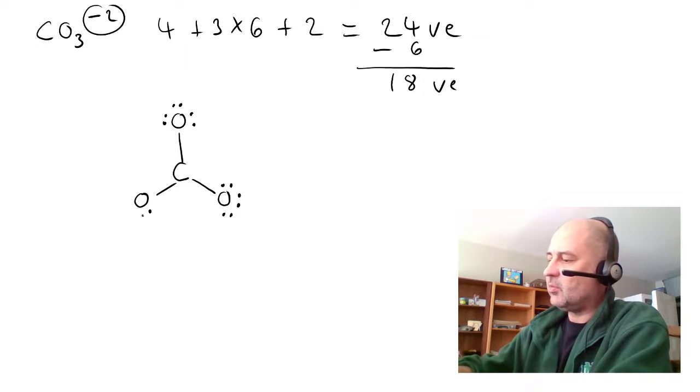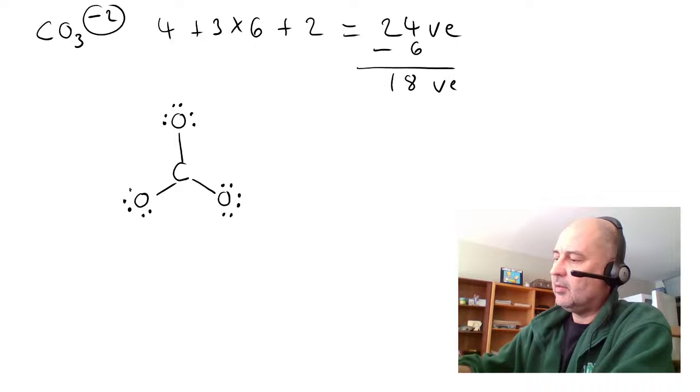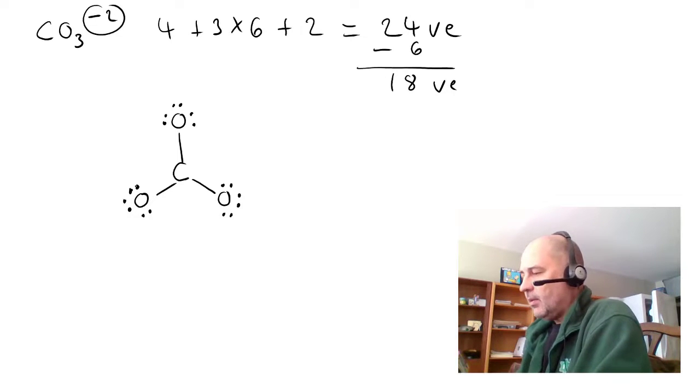We put six on each oxygen, which actually puts an octet on each oxygen in carbonate. And then, you have to stop because you ran out of electrons.